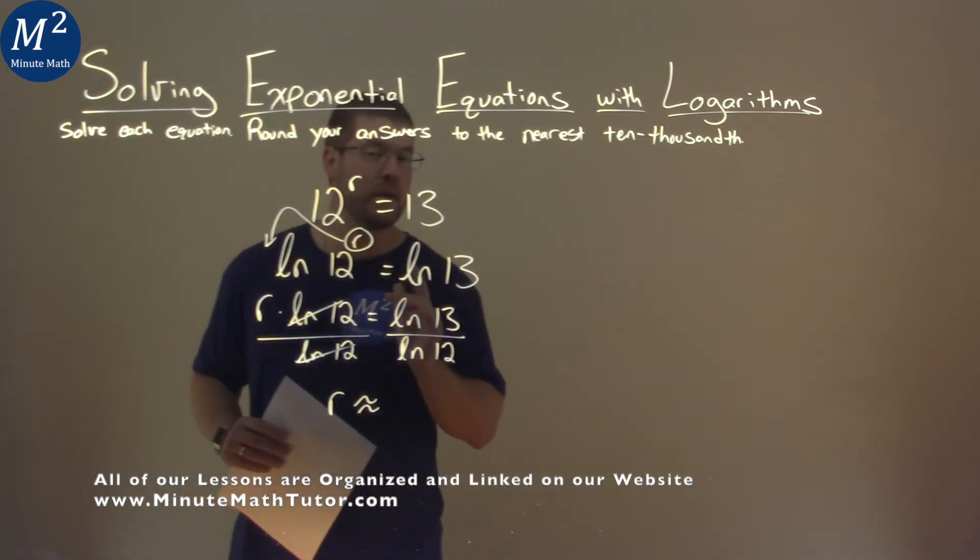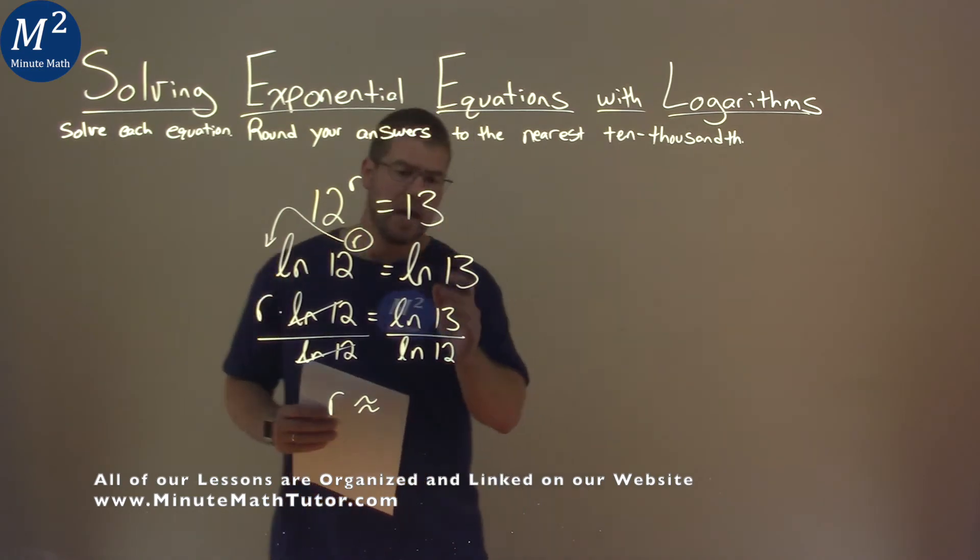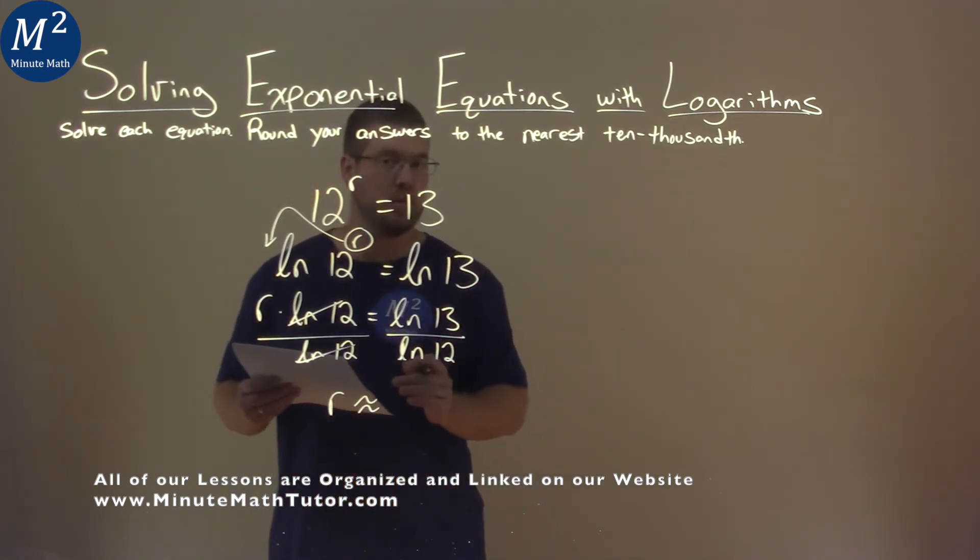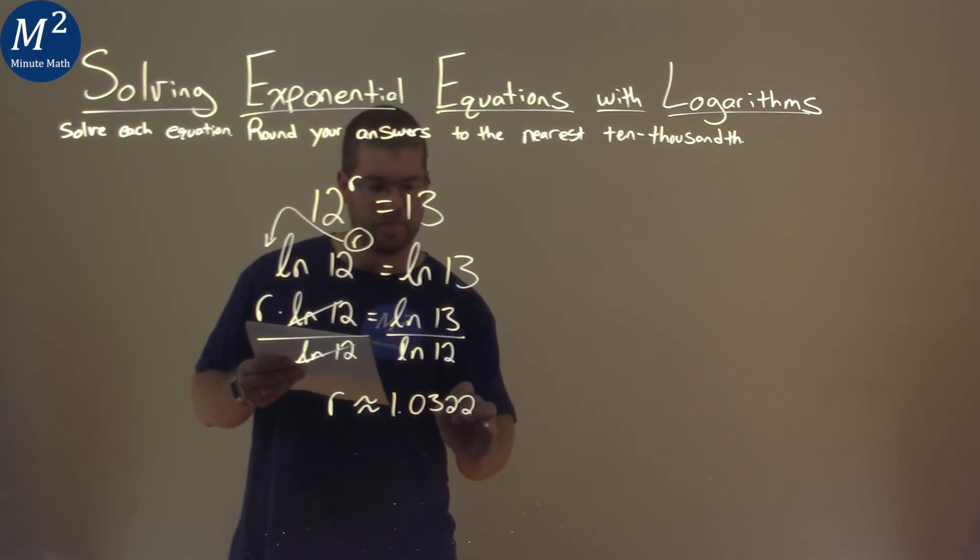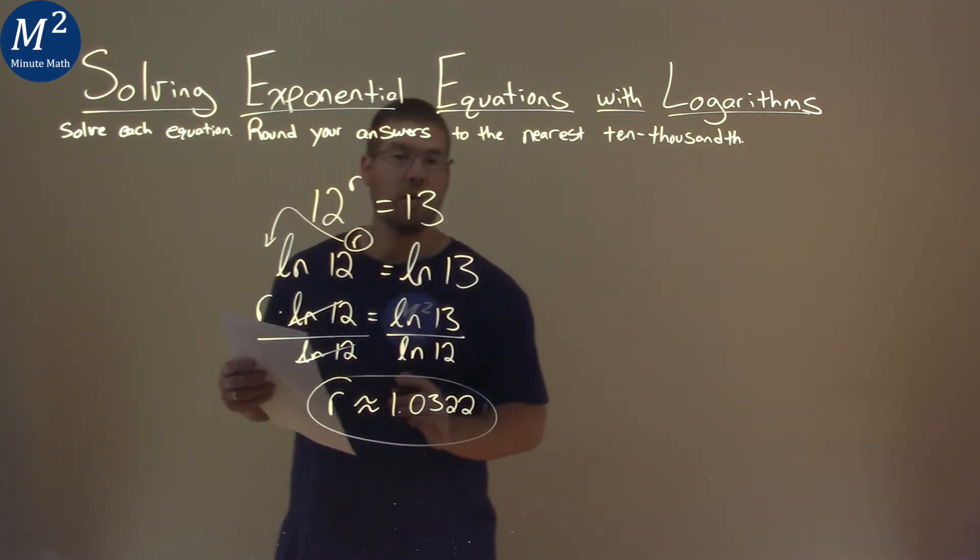This is going to be approximate because we're rounding the answer. Using our calculator, the natural log of 13 divided by the natural log of 12 comes out to be 1.0322. And that is our final answer.